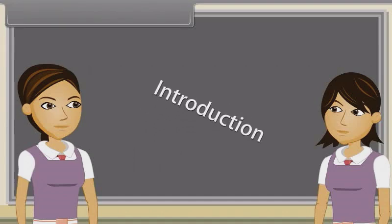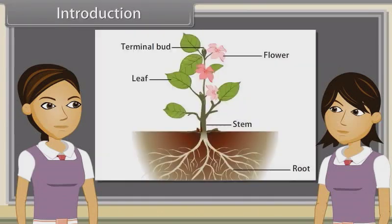We have already discussed characteristics, types, modifications and functions of roots, stems, leaf, inflorescence and flowers.